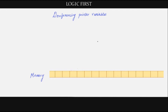Welcome to Logic First. In this video, let's learn about dereferencing pointer variables. In the previous video we learned how to declare a pointer variable. Say if there is an integer variable called 'a' taking the value of 20 and if you want to declare a pointer for this variable, you should declare that as integer as well, mentioning a star to indicate that this is a pointer, and give some name for the pointer.